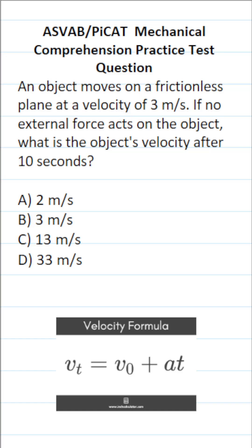This mechanical comprehension practice test question for the ASVAB and PyKET says, an object moves on a frictionless plane at a velocity of 3 meters a second. If no external force acts on the object, what is the object's velocity after 10 seconds?